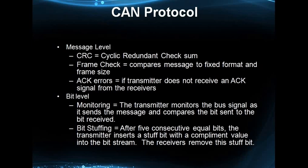At the bit level, every node in the network, when it sends a bit — either dominant or recessive — it will sense it back. If what it reads back doesn't match what it sent, then it becomes a bit error. However, in the case of the acknowledgement slot, the transmitter sends a recessive bit but expects to receive a dominant bit back.